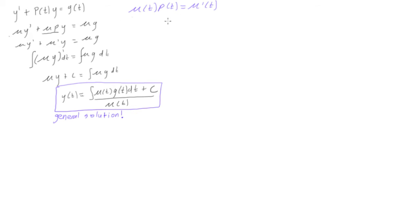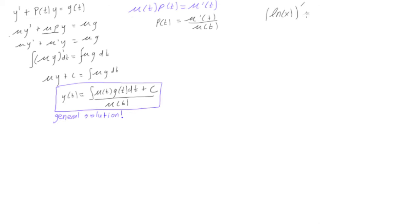If we start with the equation mu times p equals mu prime and rearrange it, we get p(t) equals mu prime(t) over mu(t) — we just divided both sides by mu(t). Now if we look at this, we have mu prime over mu. If we take the derivative of ln(x), we get one over x times x prime, which equals x prime over x. That's exactly the pattern we're seeing here.